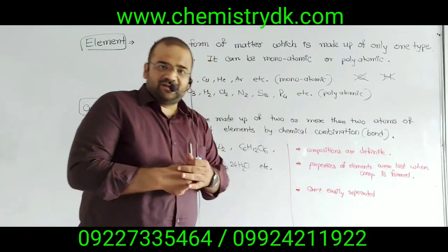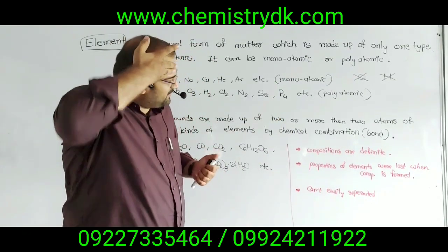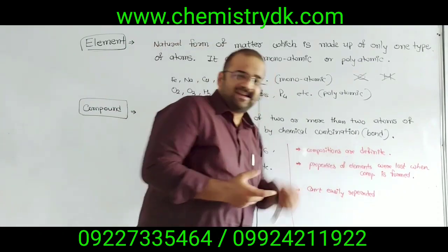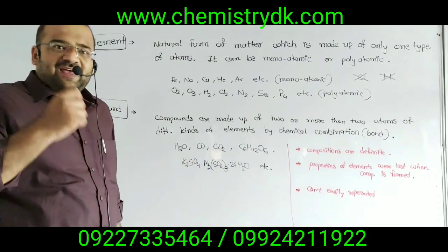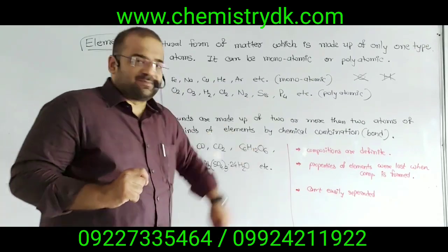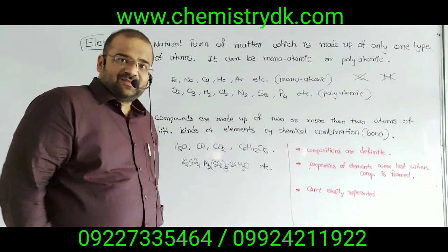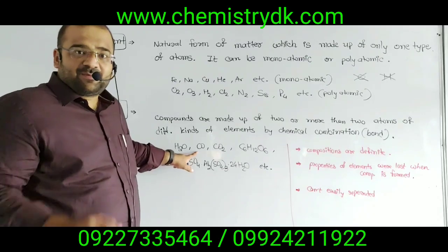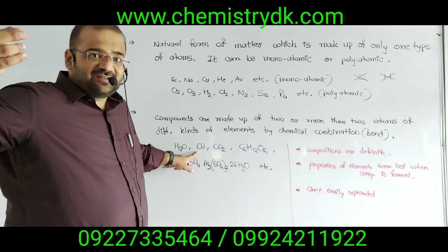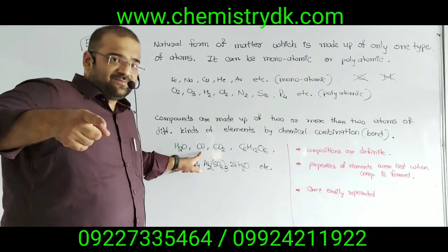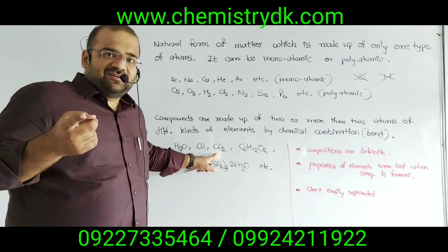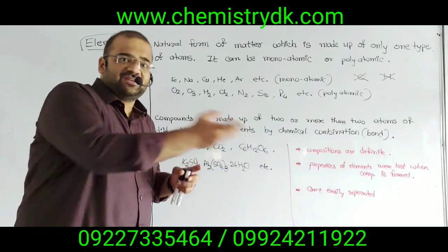There are three properties of compounds you need to remember. First, the composition of compounds is definite. In H2O, the proportion of H and O is 2:1. In C6H12O6, the proportion of carbon, hydrogen, and oxygen is 1:2:1. In carbon monoxide, carbon and oxygen are in a 1:1 ratio. When the proportion changes — for example, 1:1 gives carbon monoxide, but 1:2 gives carbon dioxide. If the proportion changes, the compound also changes.